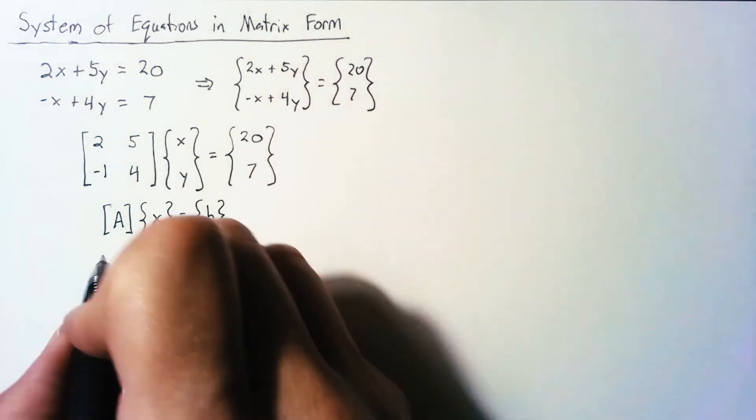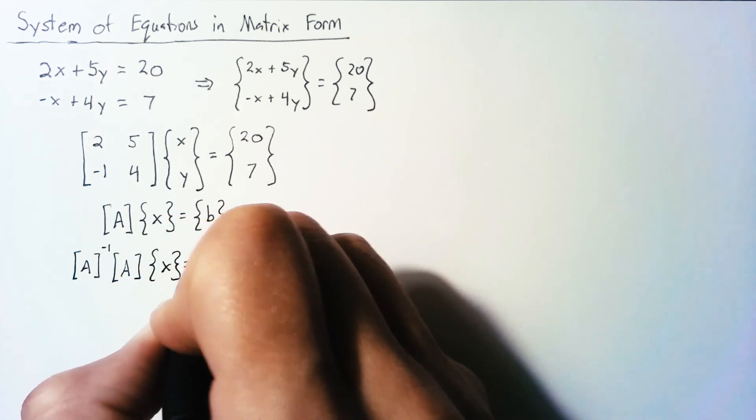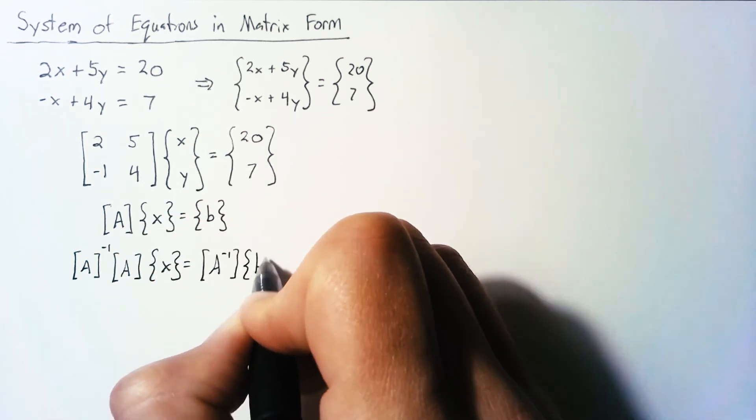Now, how do we actually solve this? We pre-multiply both the left and the right hand side by the inverse of A.